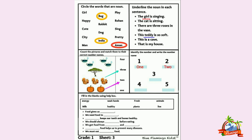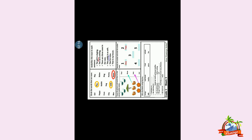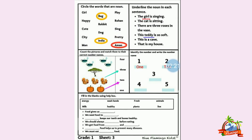Girl — girl kia hai? Ek bachche ka name hai jisse hum gender define kar sakte hai, so it is also a noun. Rabbit — ek animal ka name hai, it is also a noun. India — India ek country ka name hai, so ye bhi noun hai. Everything which has a name — that is noun.